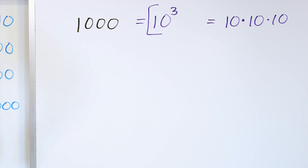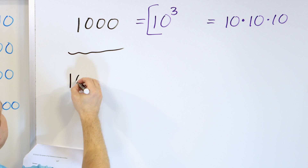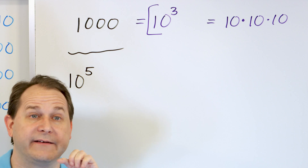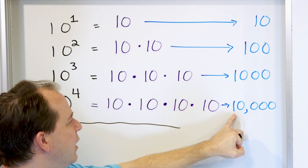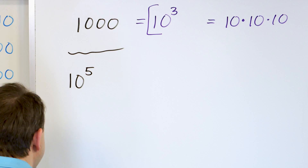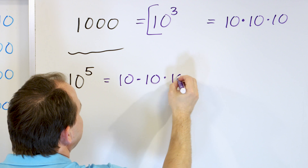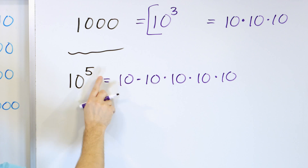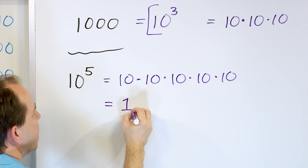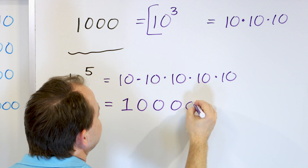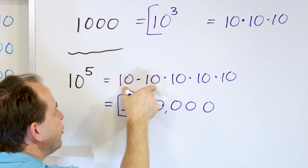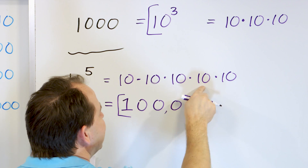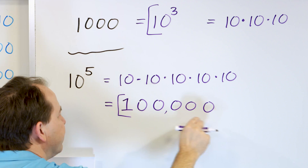Let's convert ten to the power of five into a standard number. What this really means is ten times ten times ten times ten times ten — five of them. If you're writing it as a full number, it's a one with five zeros after it. Put your comma in, and the answer is one hundred thousand. Ten times ten is a hundred, times ten is a thousand, times ten is ten thousand, times ten again is one hundred thousand.